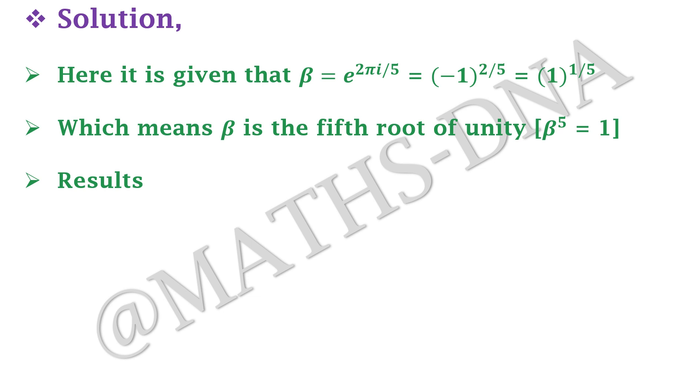And we have two results on the roots of unity. The first one is the sum of the roots that is 1 + β + β² + β³ + β⁴ = 0. And the product of roots that is 1 · β · β² · β³ · β⁴ = 1. These results will be useful to us in solving our question.